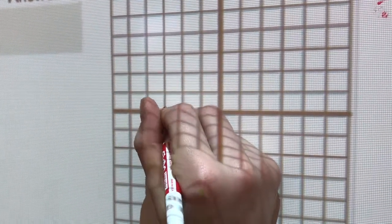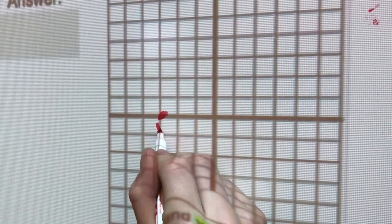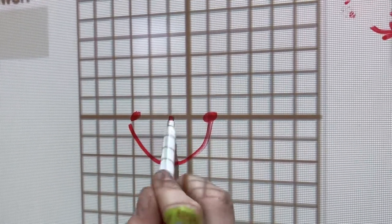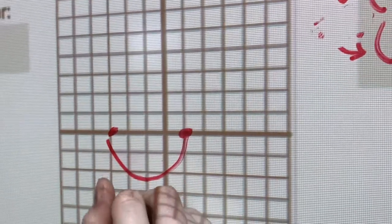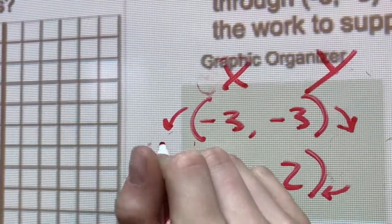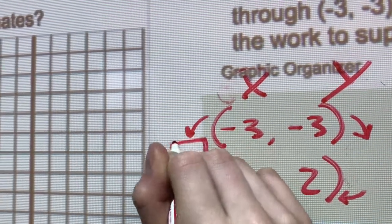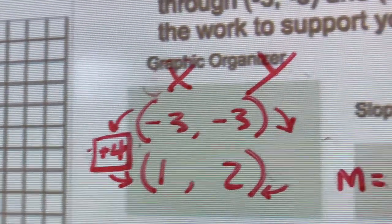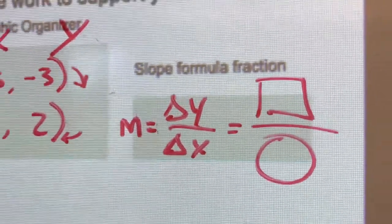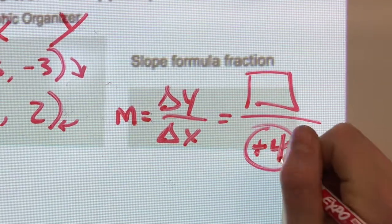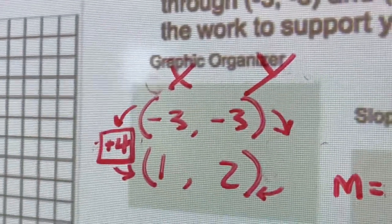Show me the change in x on that grid over there. Where are you starting? So you're starting right here, and you're going to positive 1, which is over here. So 1, 2, 3, 4. So positive 4. So I'm going to put a box here, put positive 4. Okay, and that's your change in x. So let's get your change in x in the graphic organizer for slope. Positive 4.